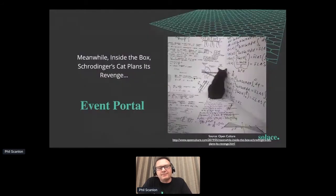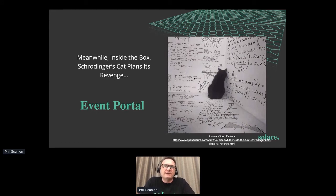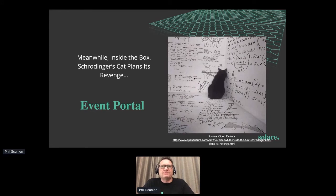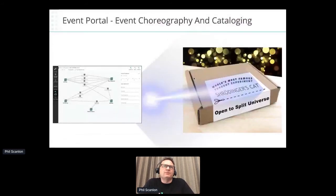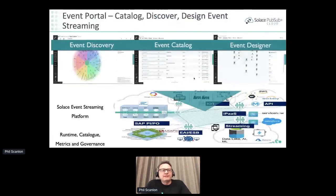Coming back to Schrödinger's cat — the cat is inside the box, but if I open the box, the cat dies. How can I look inside without killing the cat? Traditionally, if I added logging to events, that would slow down my system — eventually kill it. What Solace has done is built isolation between consumers in the event broker, which allows us to map out what the box does. The Solace Event Portal allows us to see what's going on inside the box. That means we can do event discovery — a probe that looks at what's running across the event mesh.